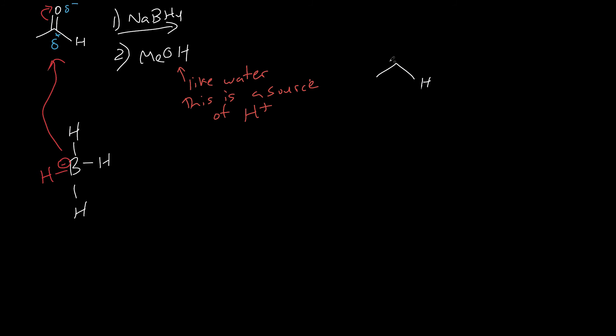The H minus is going to move to the electron poor carbonyl carbon, break that double bond, push electrons up. O minus is going to grab a proton from the methanol here. The methanol is going to behave as an acid - acid is a proton donor. This is a proton donor, minuses moving to pluses - boom, you have primary alcohol.